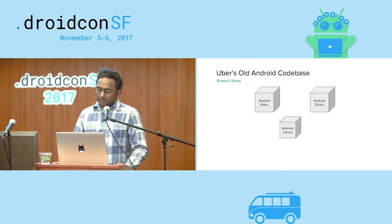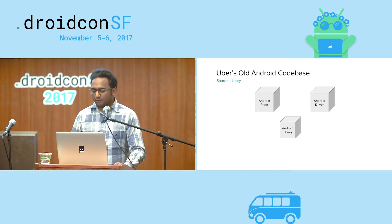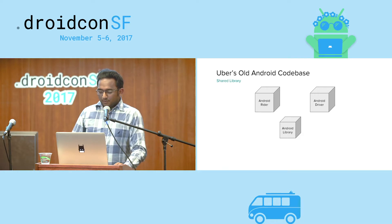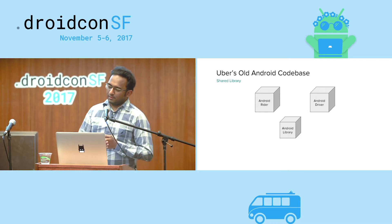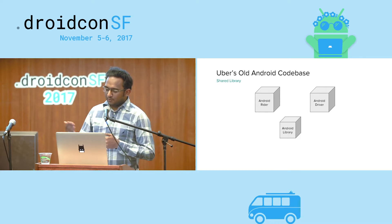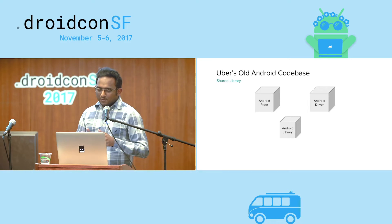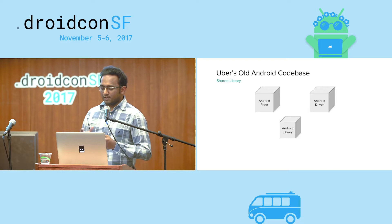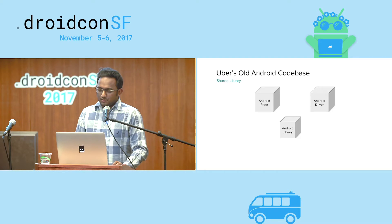We decided to put that in a separate repository called Android Library, and we did this via Maven coordinates. We set up an Artifactory instance, and every time we made changes to a library that both different apps depended on, we would cut a new version that Rider and Driver would consume in the build.gradle file. That was good for a while. But at some point, we wanted to build even more apps, like the Eats app or the Fleet app. As we started building more apps, it became obvious that having just one library meant there was a lot of leakage of concerns.